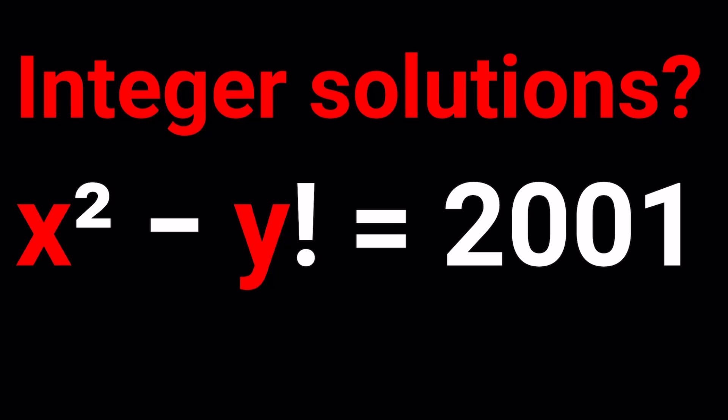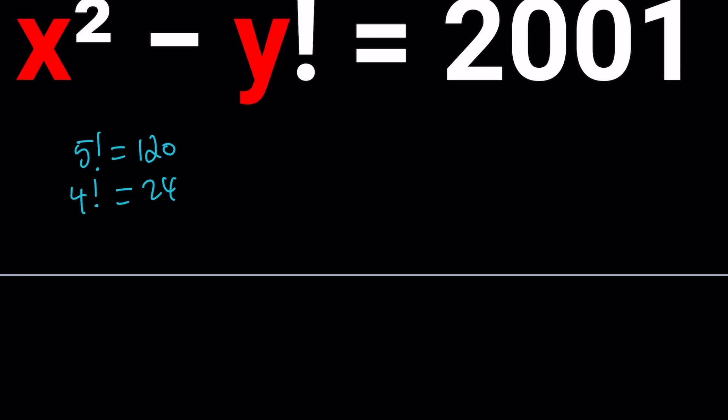First of all, one thing to notice is that for certain values of y, y factorial is going to be real big. For example, 5 factorial is 120, 4 factorial is 24, 3 factorial is 6, 6 factorial is 720, and I think 7 factorial is 5040. Now, starting with 5 factorial, all the factorials end in 0, therefore they are divisible by 10. The mod that I'm going to use is going to be mod 9.